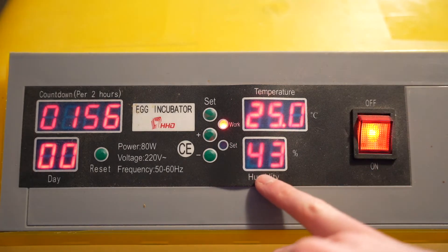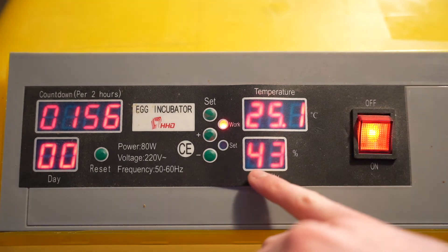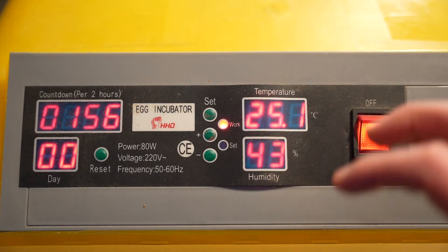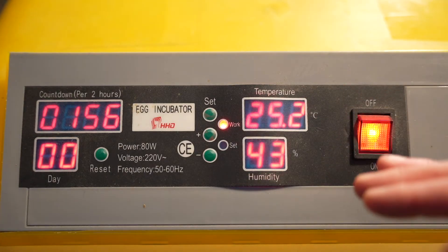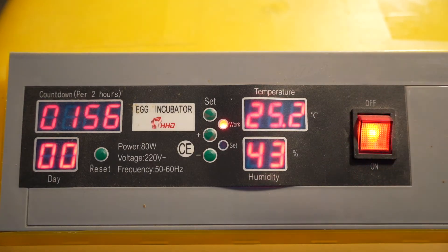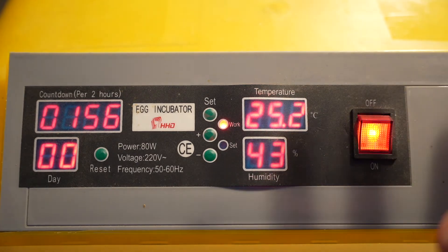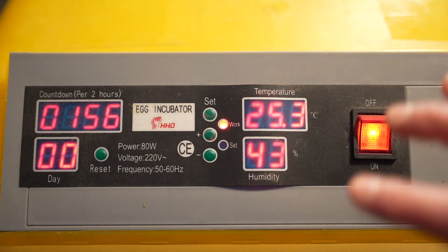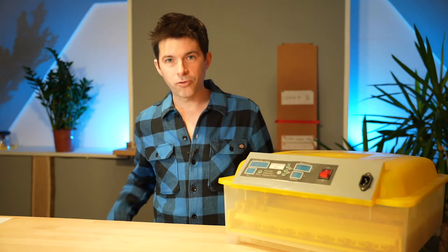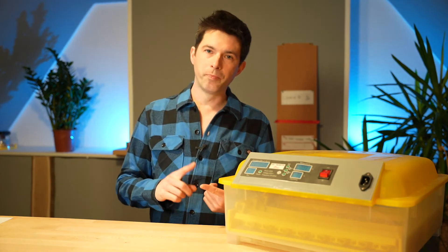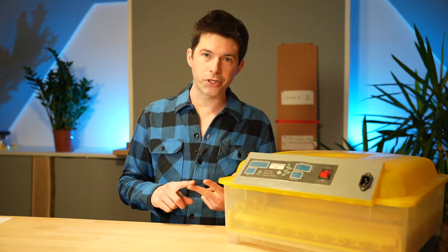As you can see we just reached 43 percent and it's blinking but because I just adjusted everything it's not giving the alarm. But if it gets above 51 and then below then it's going to set the alarm and it's making an awful noise. So now you know how to set up the temperature, the humidity alarm and the temperature alarms.